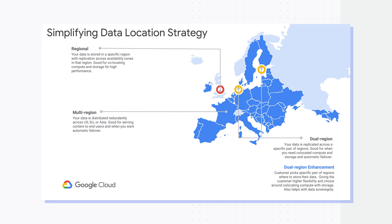There are three types of location types here: regional, dual region, or multi-region. Starting with regional, your data is stored in a specific region of your choice — for example, Sao Paulo. Regional locations are particularly good for high analytical workloads. You can localize your compute and storage together into a single region.